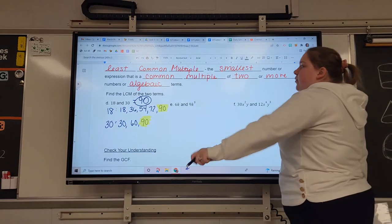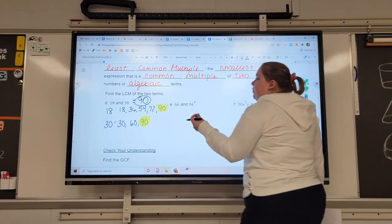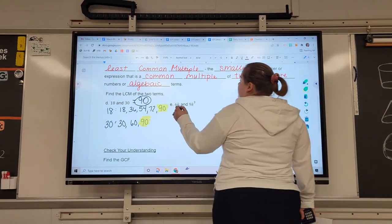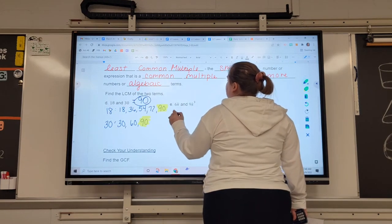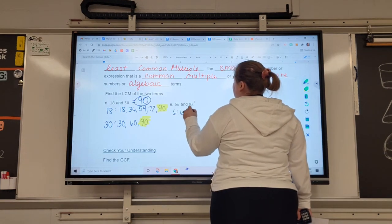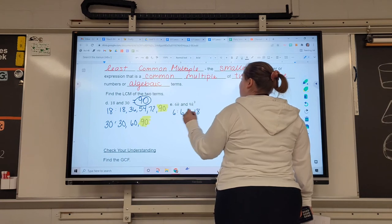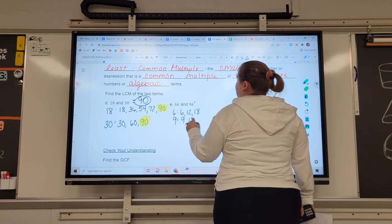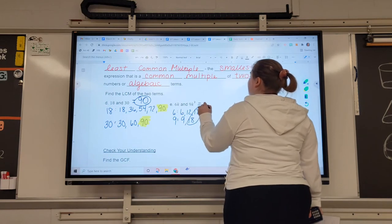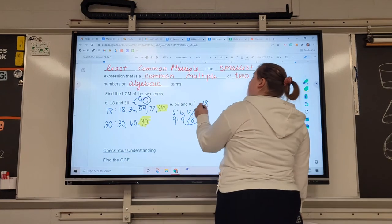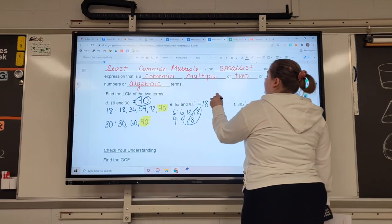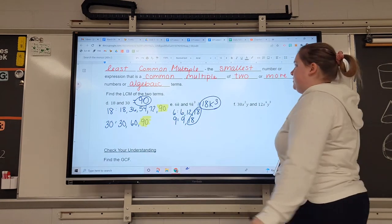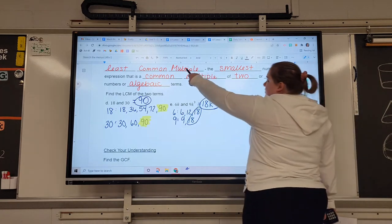When we have this with variables, we want to think of the most. We want the most. This is an expansion. So 6 and 9. 6 can become 6, 12, 18. And I'm going to stop there because I already see it. 9 and 18. So we know the number is 18. And what is the most amount of K's that we have? 3. Most. I think multiple is most.